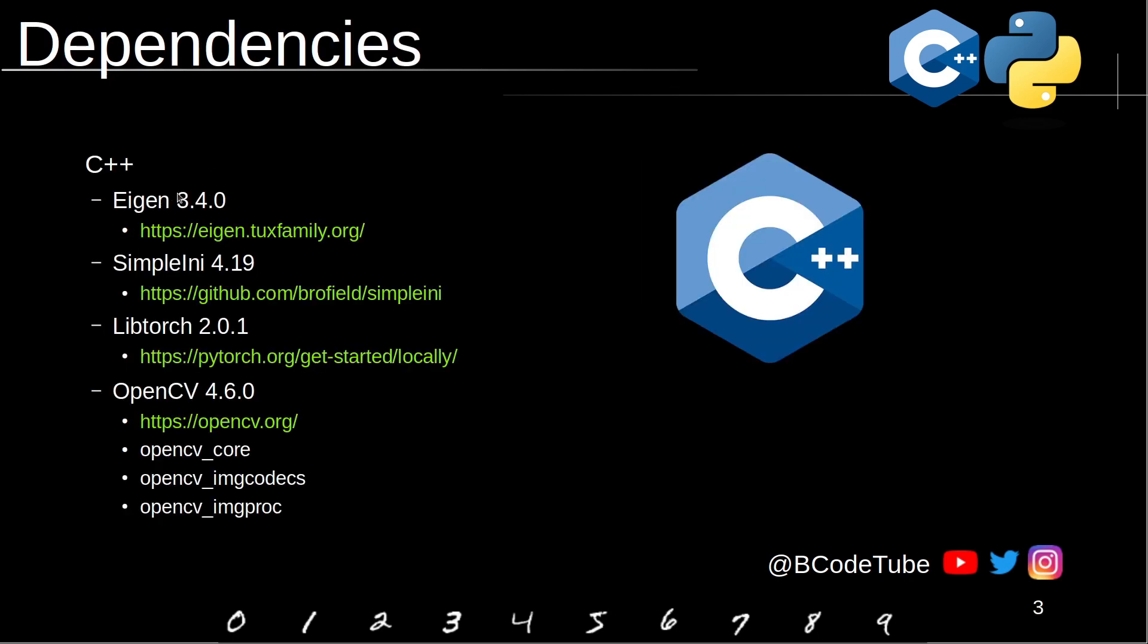I am using currently these versions: Eigen 3.4, we can get from this site. SimpleINI 4.19, SimpleINI is going to be used to load a config file, we can get from GitHub. LibTorch 2.0.1, we can download it from PyTorch directly.